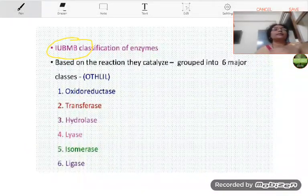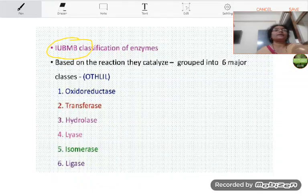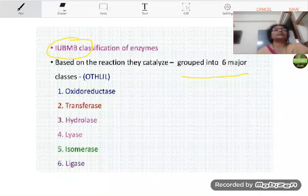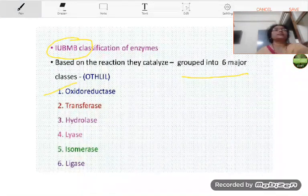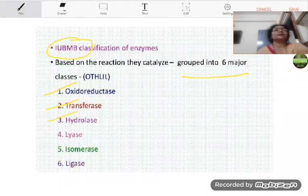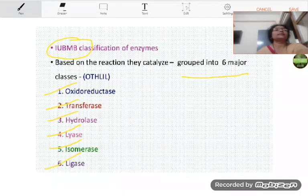The International Union of Biochemistry and Molecular Biology classified the enzymes into six major classes and these classes are oxidoreductase, transferase, hydrolase, lyase, isomerase and ligase.